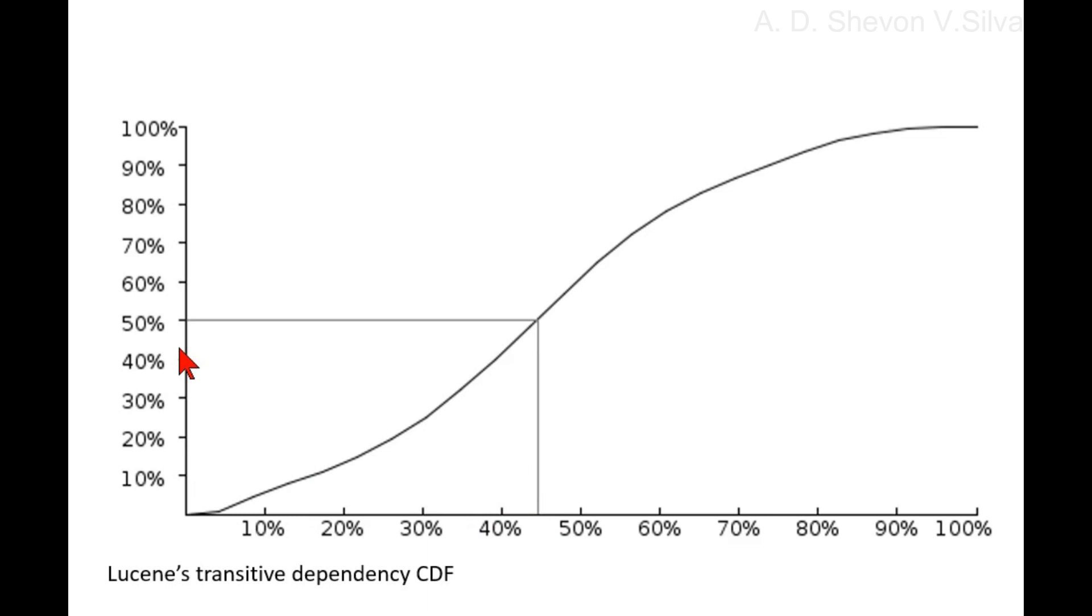This is bad. A system's resistance to ripple effect relies on most of its dependencies being short. Half of JUnit's transitive dependencies, for example, are only 30 percent of the length of its longest dependency.